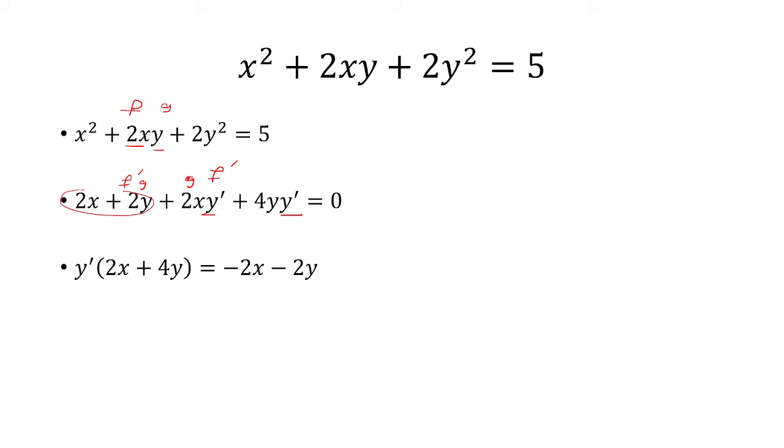And now we're going to subtract both sides by 2x and 2y. Finally, to solve for y prime, divide both sides by 2x plus 4y. And then I'm going to divide every single term by 2. So the 2s become 1s and the 4 becomes 2. Now I can plug in x equals 1, y equals 1 to get that the first derivative is negative 2 thirds.